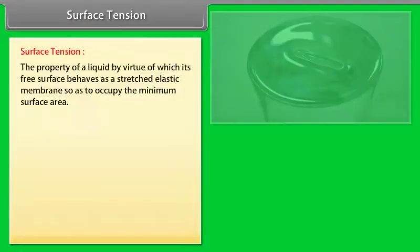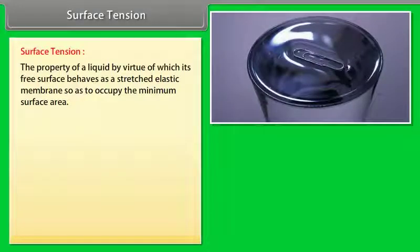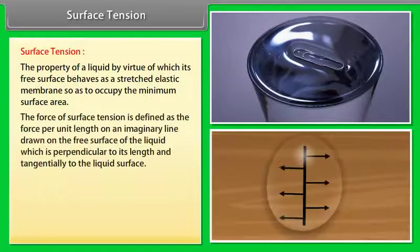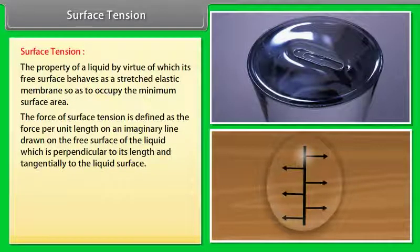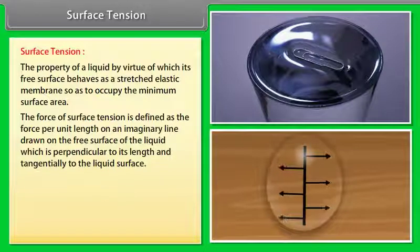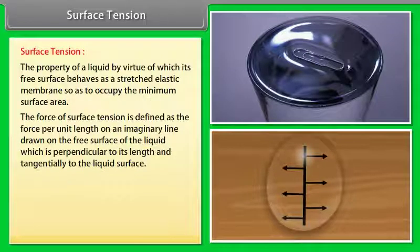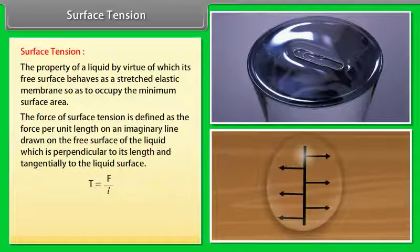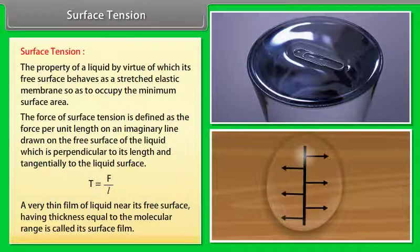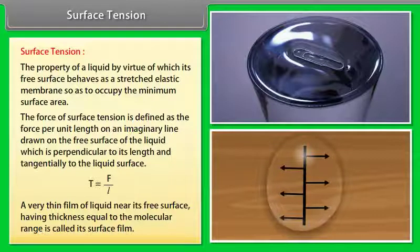Surface tension. Surface tension is the property of a liquid by virtue of which its free surface behaves as a stretched elastic membrane so as to occupy the minimum surface area. The force of surface tension is defined as the force per unit length on an imaginary line drawn on the free surface of the liquid which is perpendicular to its length and tangentially to the liquid surface. T equals F/L. A very thin film of liquid near its free surface having thickness equal to the molecular range is called its surface film.